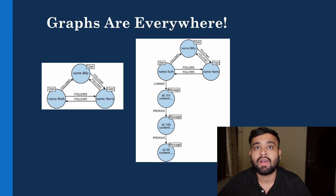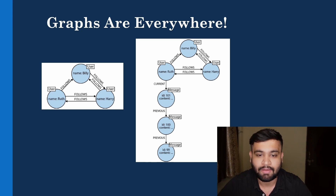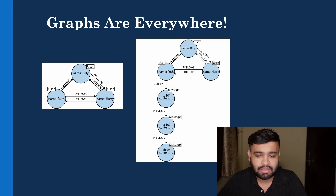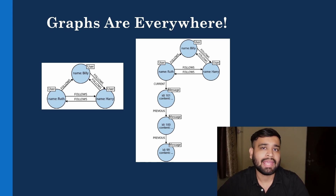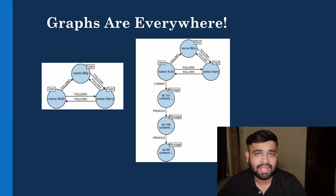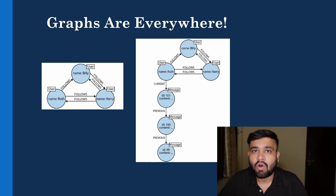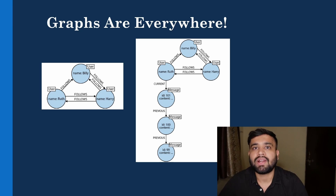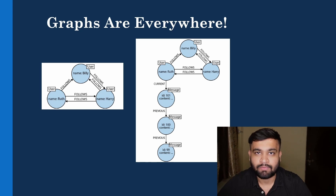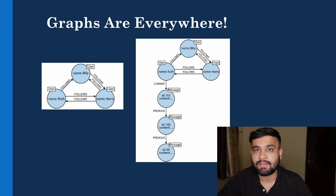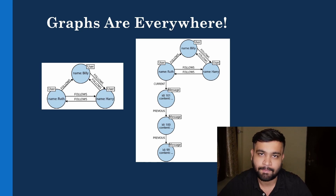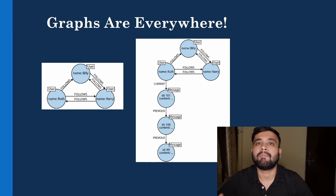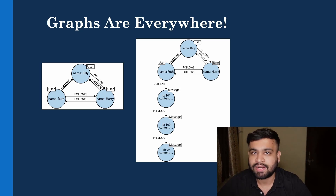All the attributes you provide during Twitter account creation — contact information like email, location, and phone number — will all be created as nodes in the graph. These represent different entities with different labels: one for location, one for email, and so on. This creates billions of nodes in the Twitter database.